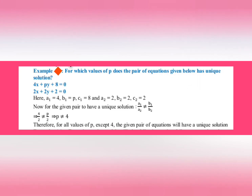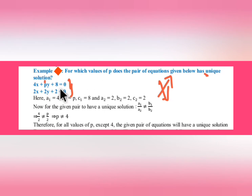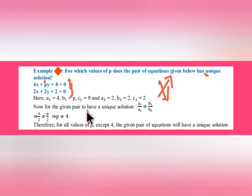Another type of question: For which value of p does the pair of equations below have a unique solution? Two equations are given. Since unique solution means the lines intersect, we use the condition a1/a2 ≠ b1/b2. Here a1 = 4, a2 = 2, b1 = p, b2 = 2. Substituting: 4/2 ≠ p/2, so cross-multiplying gives 2p ≠ 8, meaning p ≠ 4. Therefore for all values of p except 4, the pair will have a unique solution.